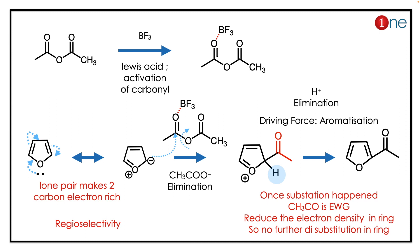Acetic anhydride reacts with boron trifluoride — it's a Lewis acid. It activates the carbonyl, and the acylium cation is formed. This acylium cation can attack many places in the furan, but the regioselectivity is defined by electron density.